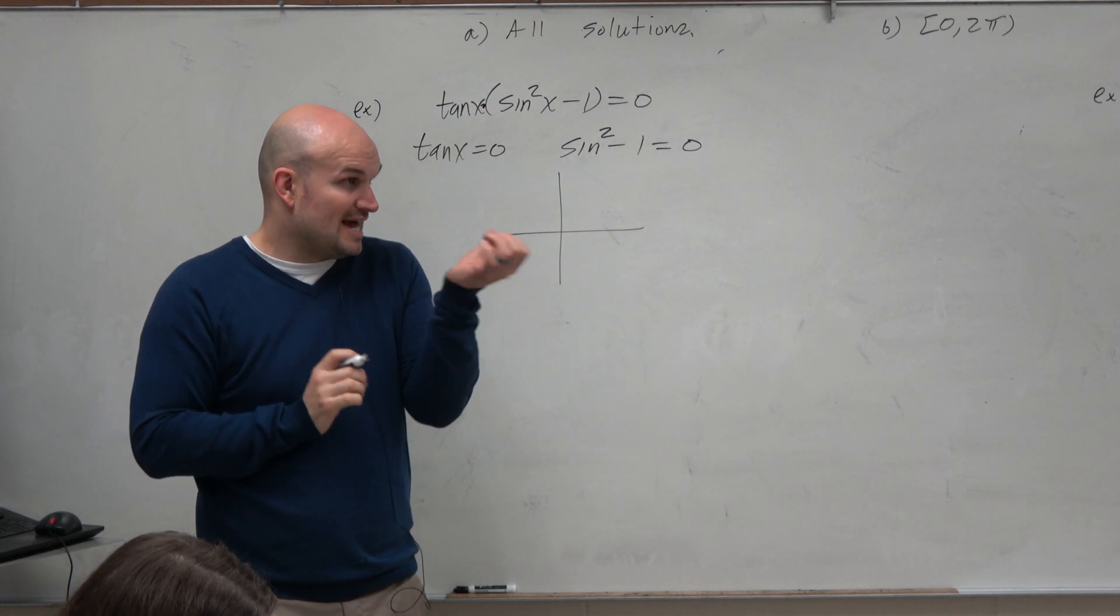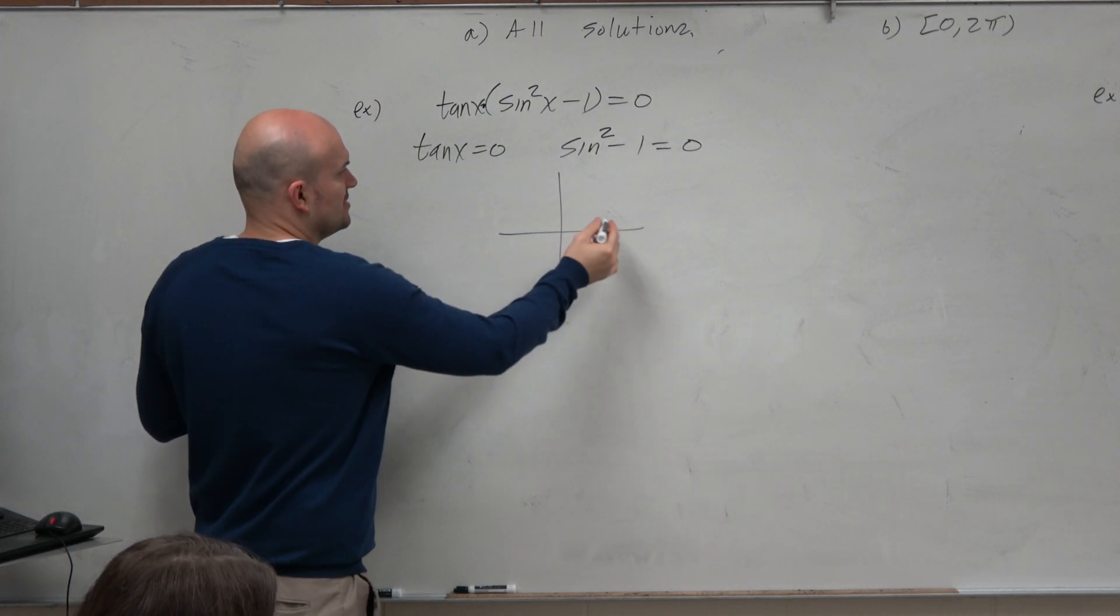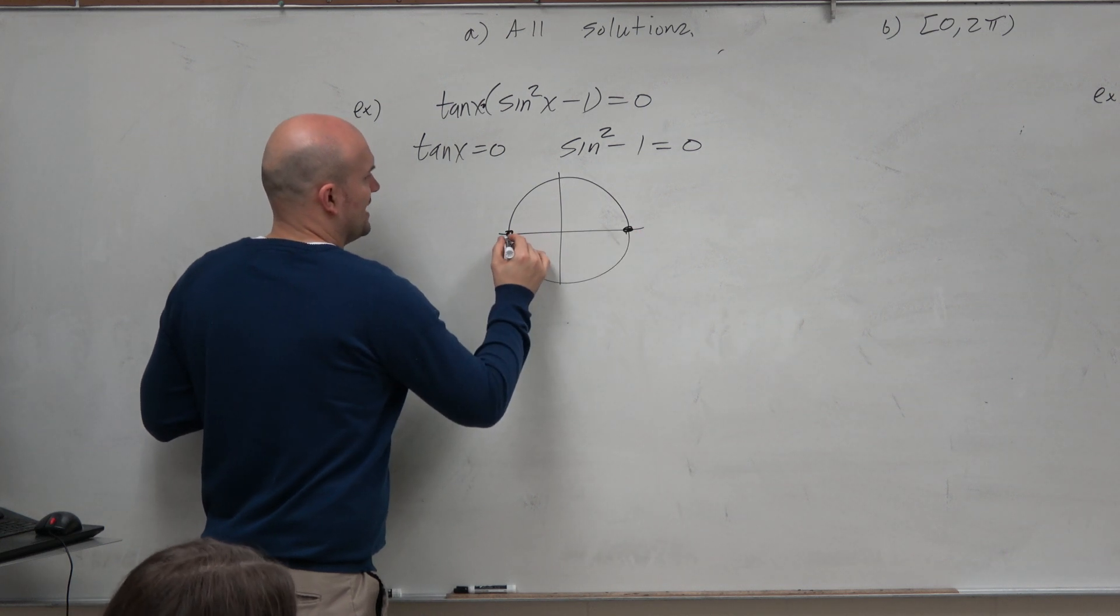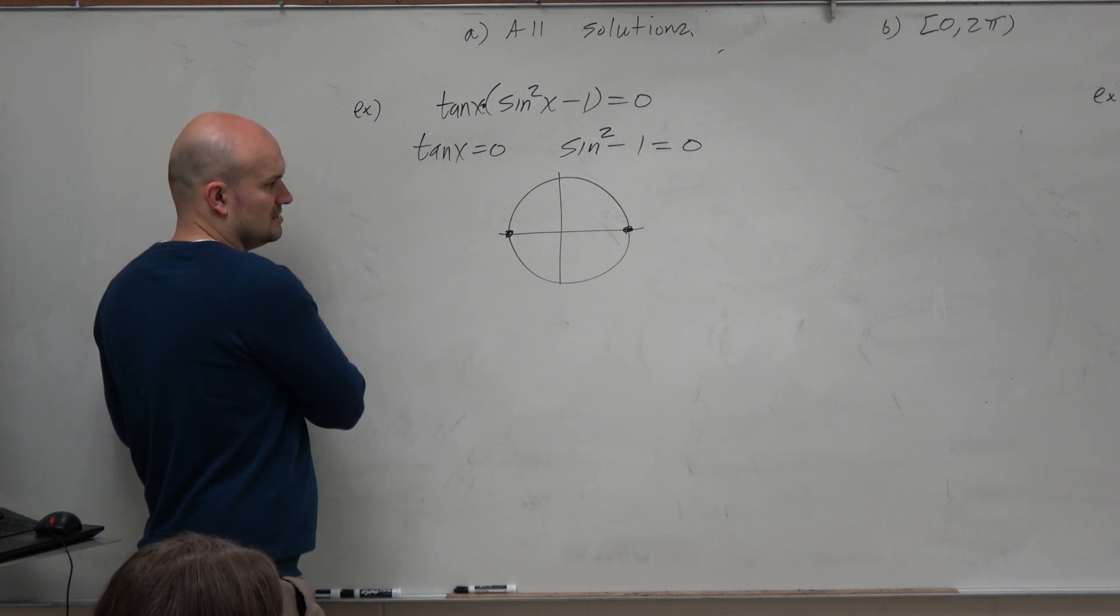So tangent is going to be 0 when the x-coordinate is 1, but the y value is 0, whenever the y value is 0. So that's going to be at these two angles, 0 and π.